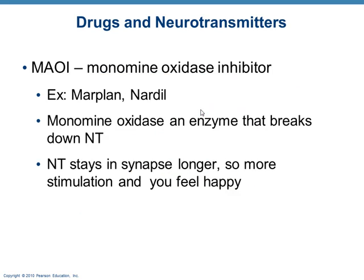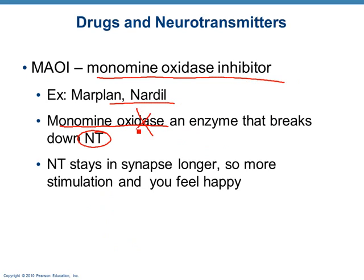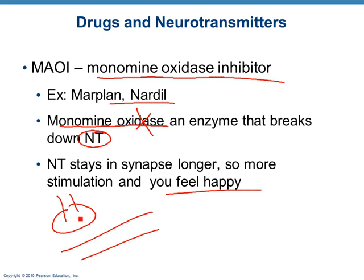MAOIs — monoamine oxidase inhibitors — examples include Nardil and Marplan. Monoamine oxidase is an enzyme that breaks down neurotransmitters, just like acetylcholinesterase. If you block this enzyme so it can no longer work, then the neurotransmitters aren't broken down — they stay in the synapse, keep the response going, and make you feel happy. So here's your axon terminal and your organ or brain — here's your neurotransmitter being released, and instead of getting broken down by monoamine oxidase, that enzyme doesn't work. The neurotransmitter just stays there and you feel better.